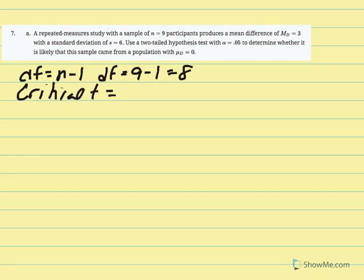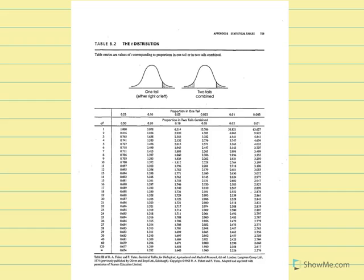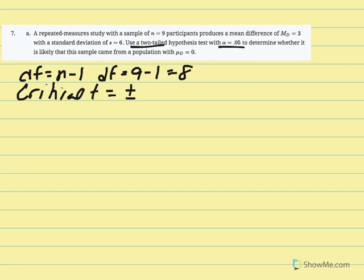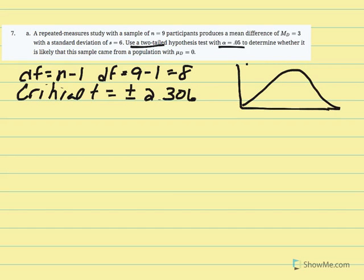Using a two-tailed test at 5% with degrees of freedom equal to 8, we get a critical t value of positive or negative 2.306. We set our critical region at negative 2.306 and positive 2.306, which defines the critical region to help us draw conclusions about this particular t value.